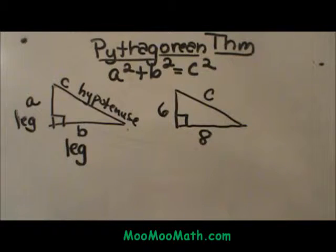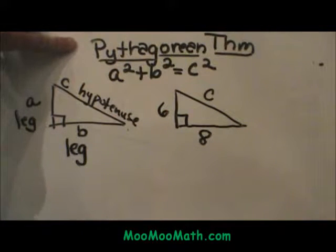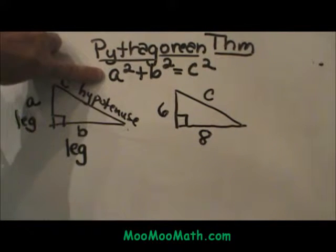Hi, welcome to Moo Moo Math. Today we are going to talk about one of my favorite theorems and that is the Pythagorean Theorem. The formula is a squared plus b squared equals c squared.